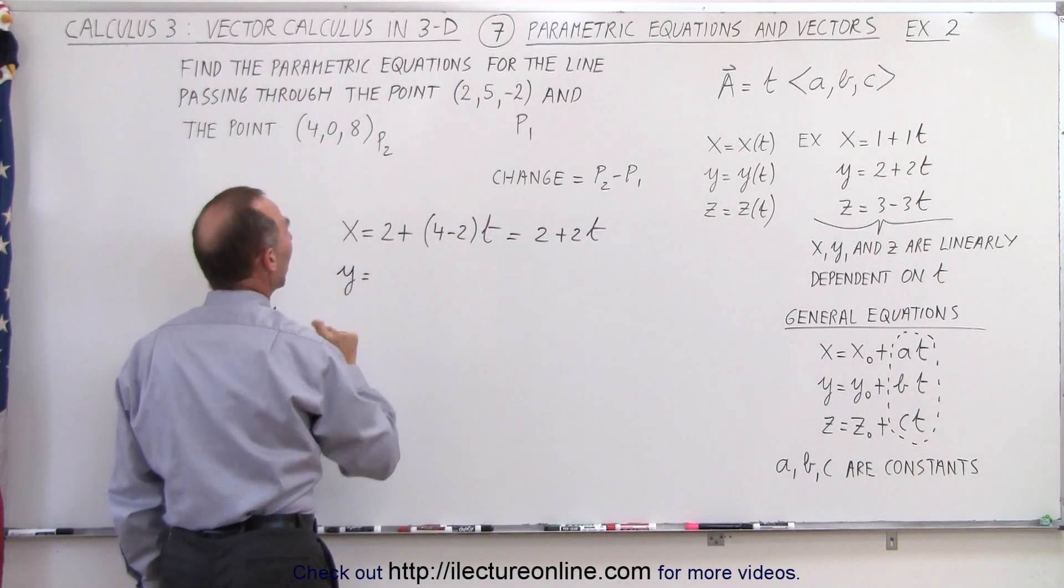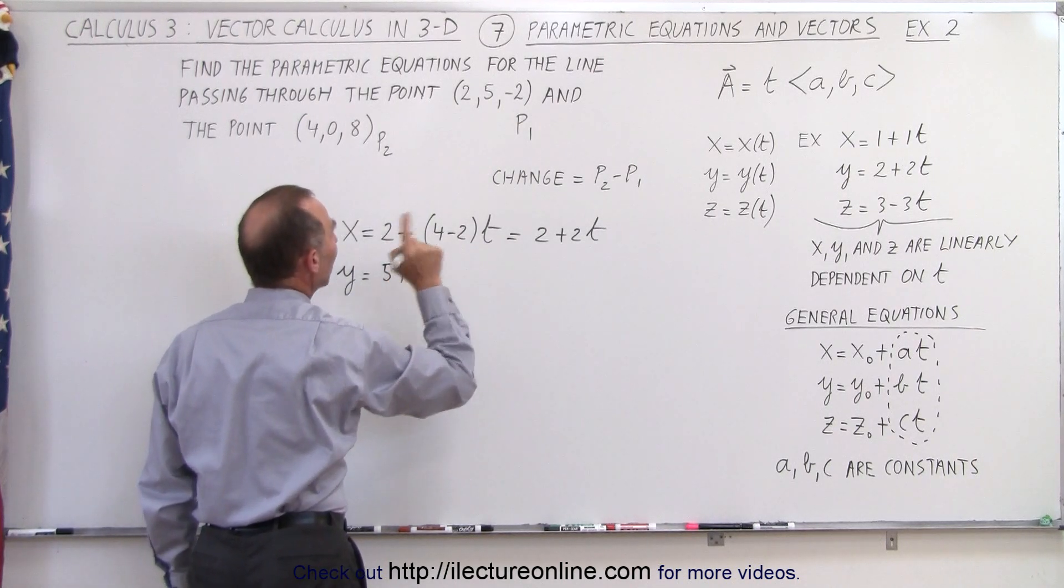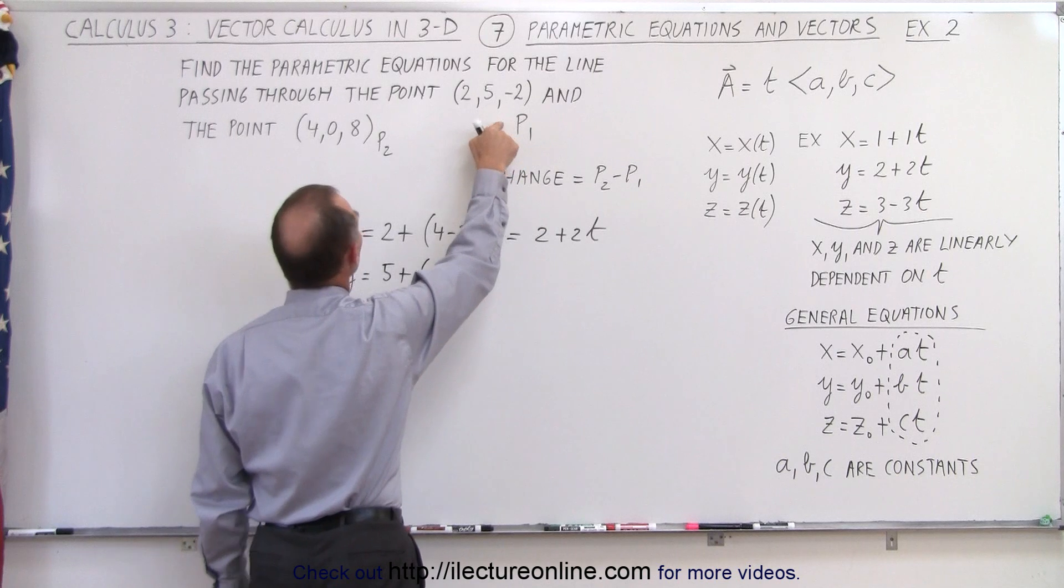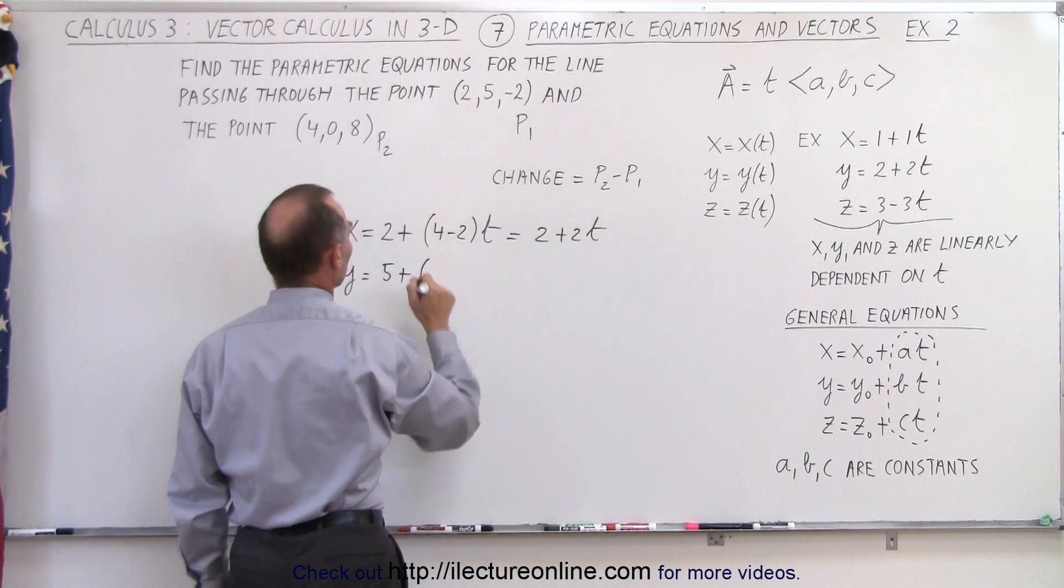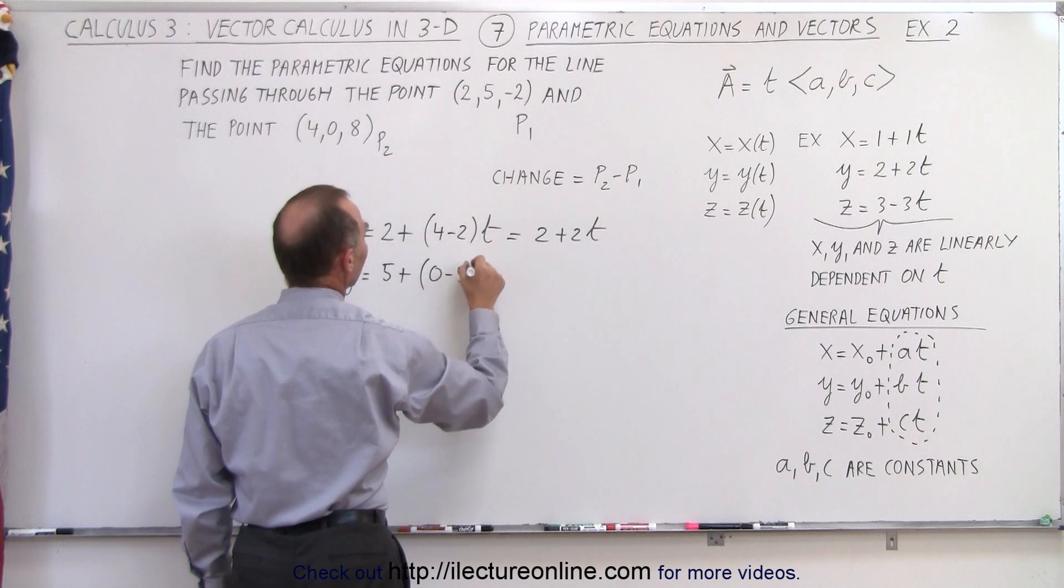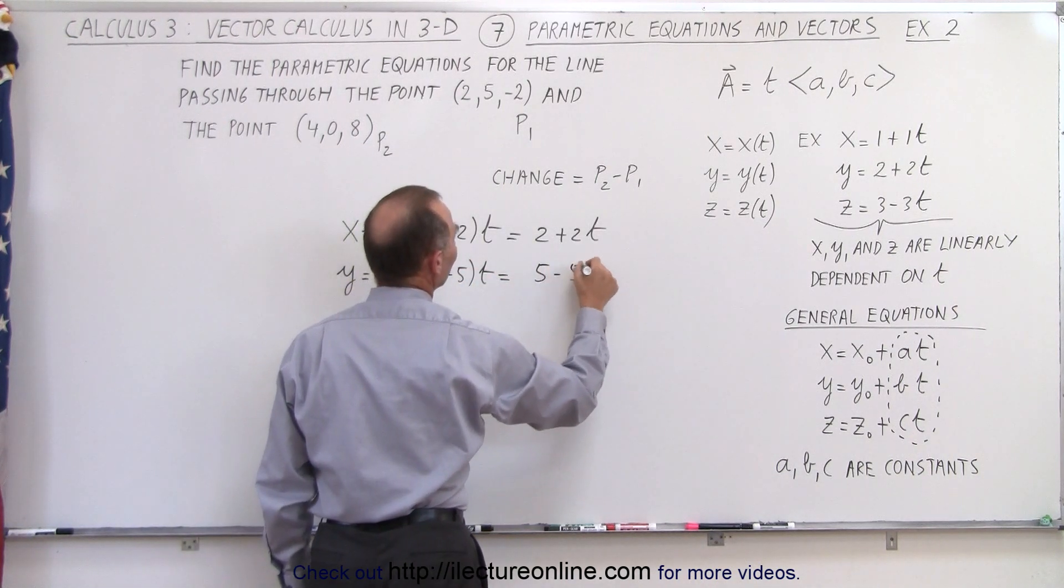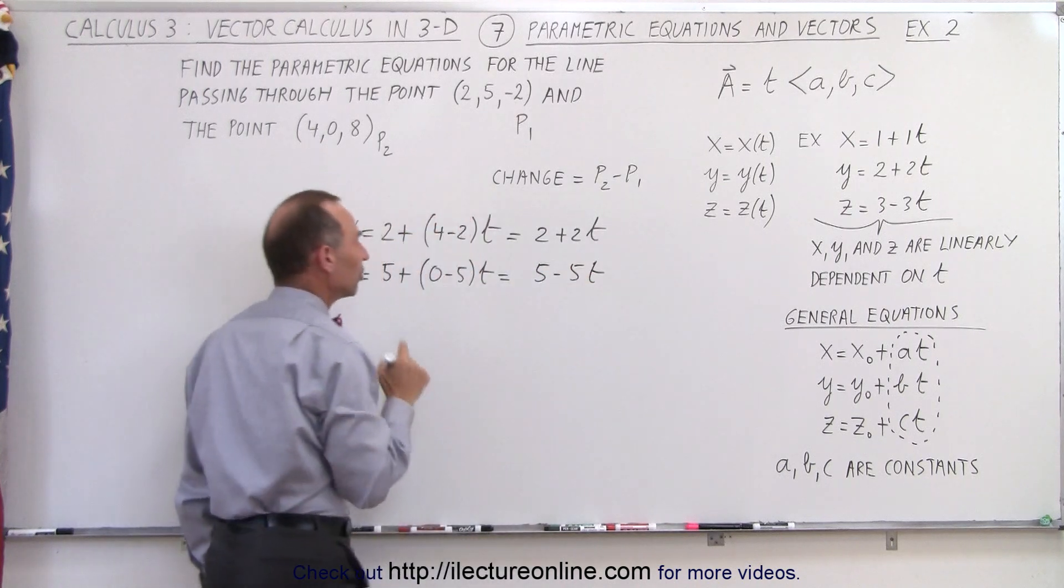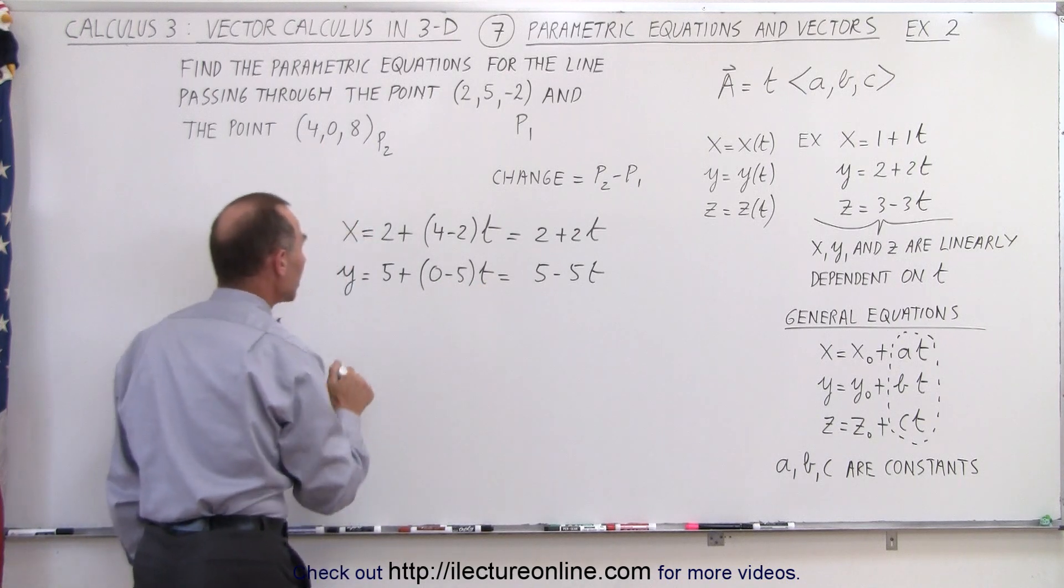For the variable y, we can take the initial position as 5 plus the change in y going from point 1 to point 2. So we take the value at point 2 and subtract the value at point 1, 0 minus 5 times t. So this is going to be 5 minus 5t for the parametric equation. Again, the change in y is going to be negative 5 for each unitary change in t.